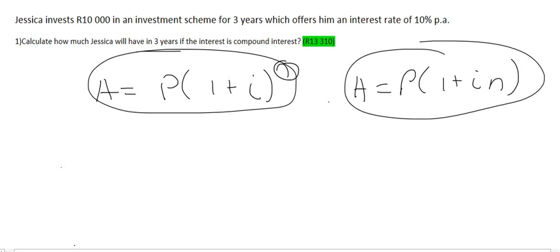Let's see if it works. So for Jessica's case we know that A is the final amount so we don't know what that is, but we know that the starting amount is ten thousand. The interest rate is ten percent which is the same as zero point one and she's investing for three years.